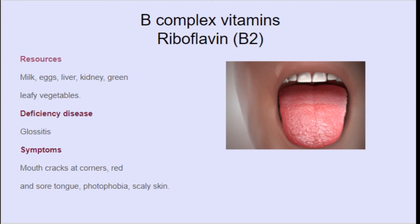One more B complex vitamin is riboflavin, called B2. The resources are milk, eggs, liver, kidney, and green leafy vegetables. The deficiency of this vitamin leads to glossitis. The symptoms are mouth cracks at corners, red and sore tongue, photophobia, and scaly skin.